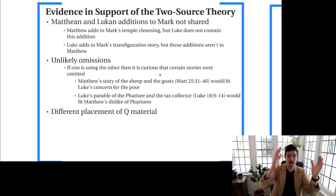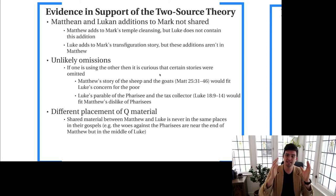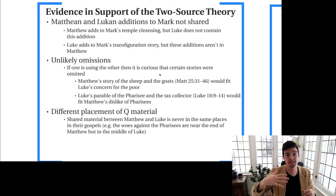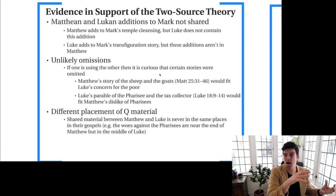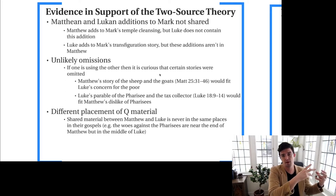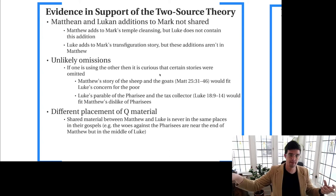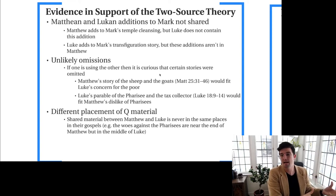There is also the different placement of Q material. Two-source theorists look at what is shared between Matthew and Luke and examine the order it appears in each gospel respectively. What they find is that the double tradition material — what two-source theorists say results from Q — appears at very different places in Matthew and Luke. If Luke is using Matthew, why is Luke not following Matthew in the order of this material? Luke follows Mark in the order of Jesus's ministry, death, and resurrection very closely — closely enough to suggest literary influence. So if Luke is doing the same thing with Matthew, why is he rearranging the material so dramatically?